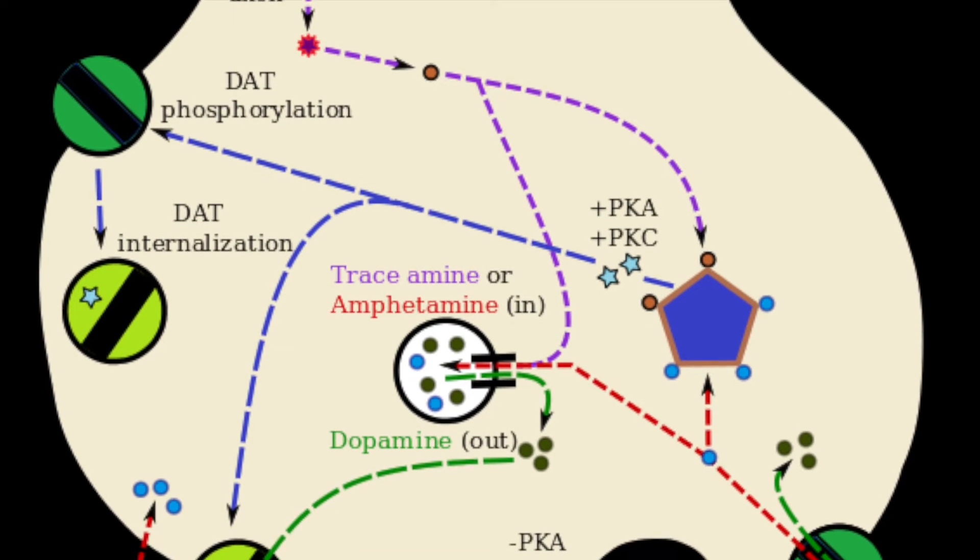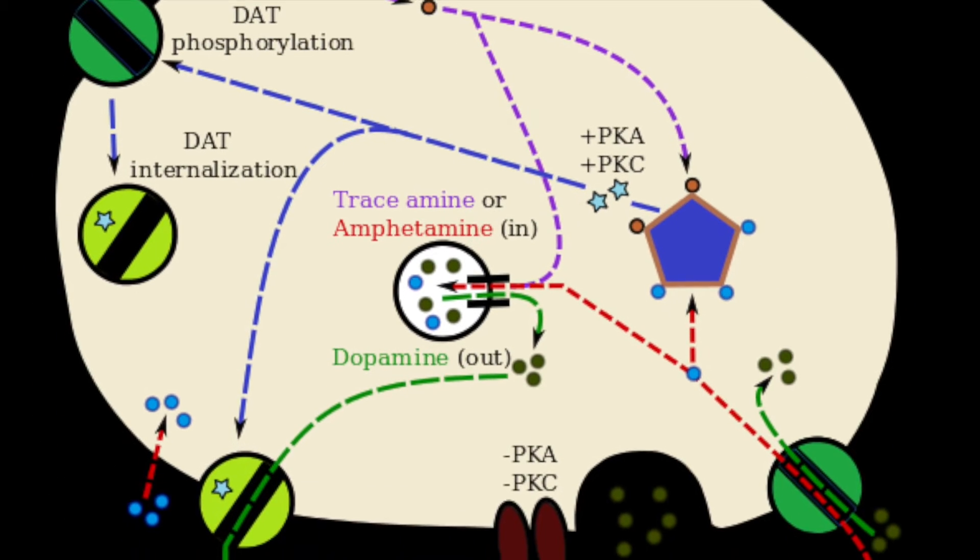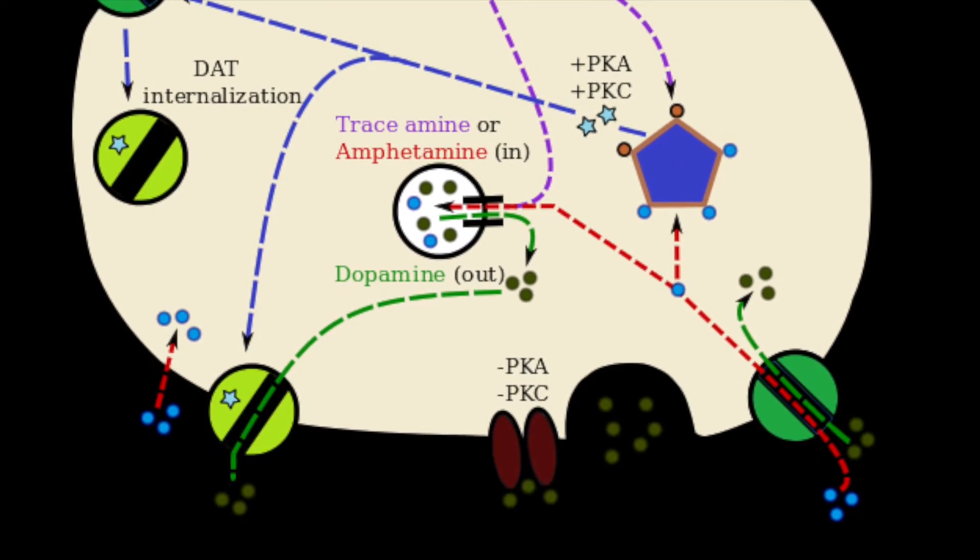The trace amine-associated receptor 1, or TAR1, constitutes a class of G-protein-coupled receptors.